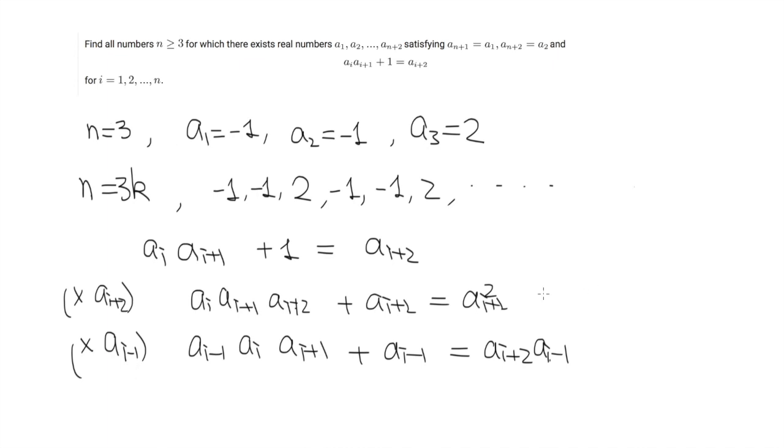Now if we sum up these relationships from 1 to n, we get the sum of a_i a_{i+1} a_{i+2} plus the sum of a_i equals the sum of a_i squared. And if we do the same thing for the second line, we get sum of a_{i-1} a_i a_{i+1} plus the sum of a_i equals sum of a_{i+2} a_{i-1}.